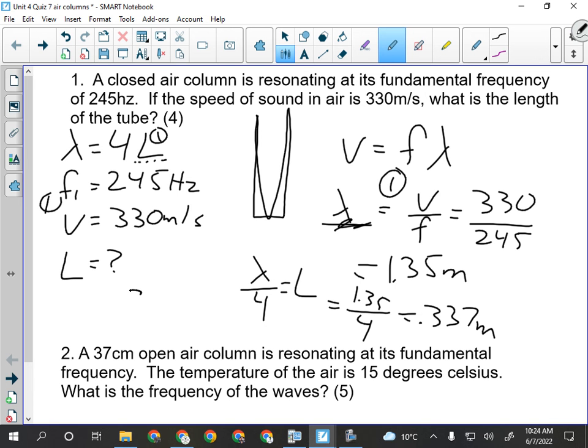And I get that the length of the tube to three significant digits is 0.337 meters. They may have also written 3.37 times 10 to the minus 1 meters, which would also be acceptable as the correct answer. Either one of those. Questions on that one?